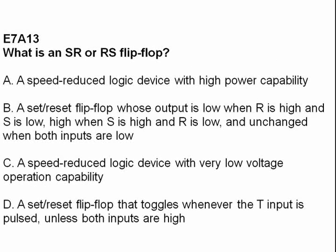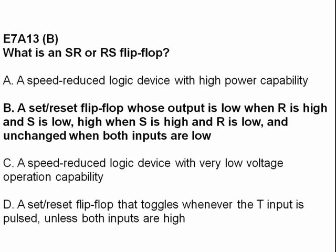What is an SR or RS flip-flop? The answer is B, a set-reset flip-flop whose output is low when R is high and S is low, high when S is high and R is low, and unchanged when both inputs are low.